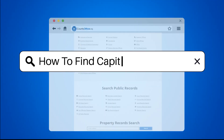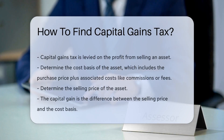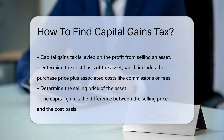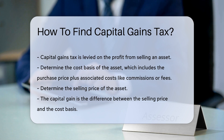How to Find Capital Gains Tax. Capital gains tax is a tax on the profit made from the sale of an asset. The first step in finding capital gains tax is to determine the cost basis of the asset. The cost basis is generally the purchase price of the asset plus any associated costs, such as commissions or fees.